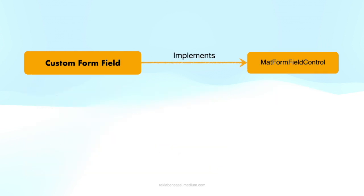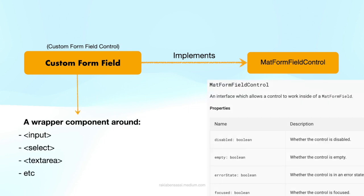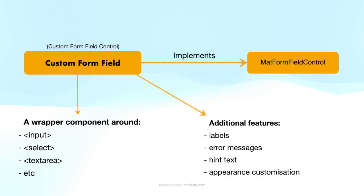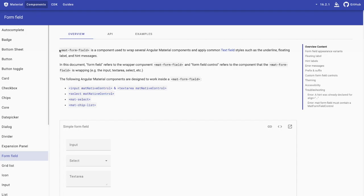On the other side, a custom form field — also known as a custom form field control — is a wrapper component built around one or multiple custom form controls or built-in form controls, like input or select. Custom form fields provide additional features such as labels, error messages, hint text, and appearance customization. Angular Material provides the MatFormField component, which is a custom form field that you can use with various form controls like mat-input, mat-select, etc.